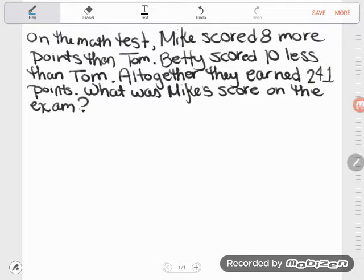Ronald had some questions about how to work algebraic word problems. So let's take a look at this particular word problem. On the math test, Mike scored 8 more points than Tom. Betty scored 10 less than Tom. Altogether, they earned 241 points. What was Mike's score on the exam?